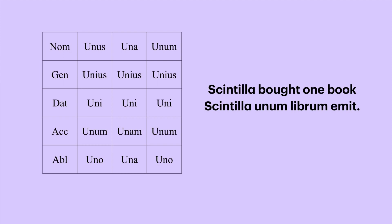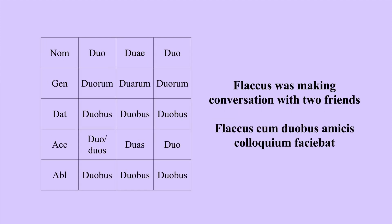If we want to say 'Scintilla bought one book,' we say: Scintilla unum librum emit. Now for two — once again we want to pay special attention to how it declines. Importantly, one only exists in the singular, while two and three only exist in the plural.